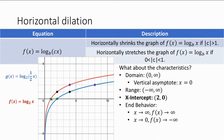So the only characteristic that changed for horizontal dilations was our x-intercept — everything else stays the same. To summarize: for vertical dilations, none of the characteristics change, and the points change but not our x-intercept. For horizontal dilations, the only characteristic that changes is our x-intercept, and all other characteristics stay the same — but we also have to think about whether it's a shrink or a stretch.